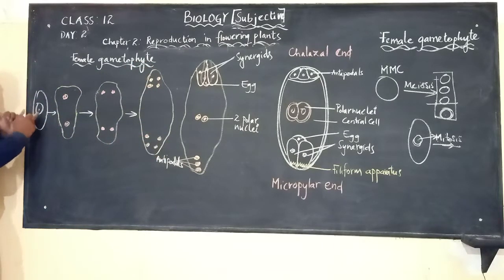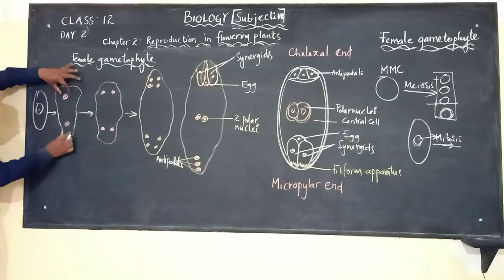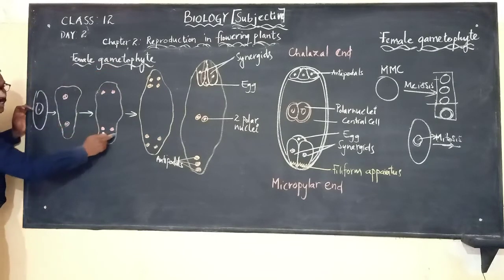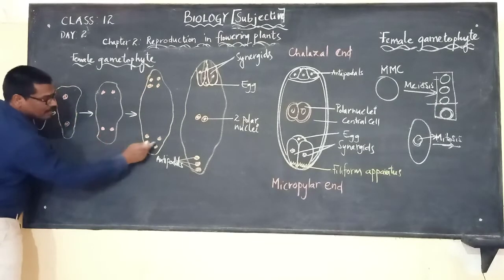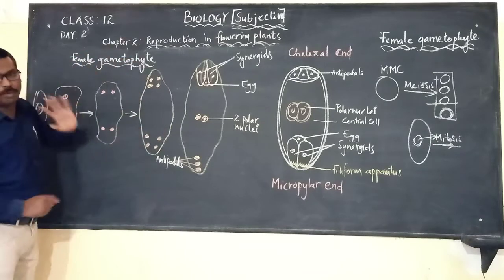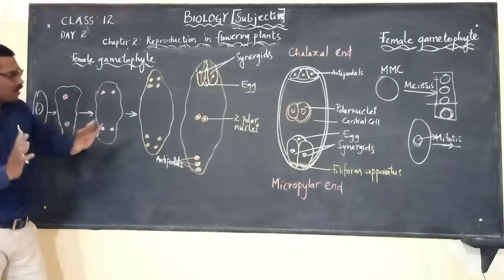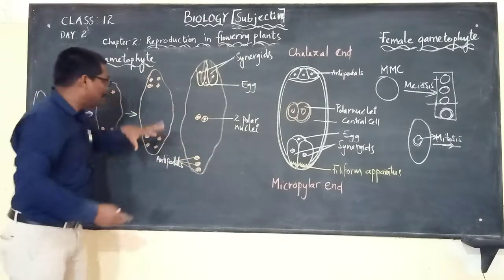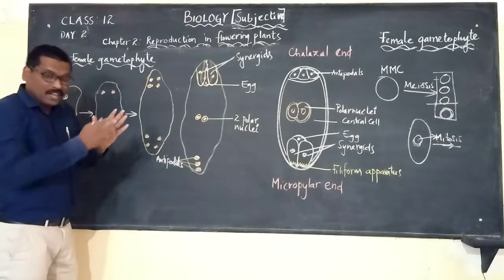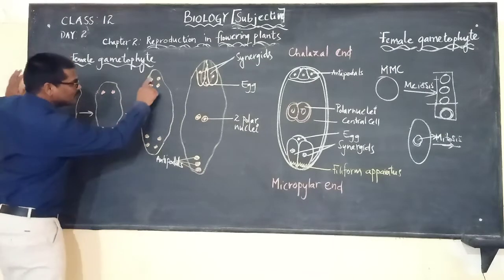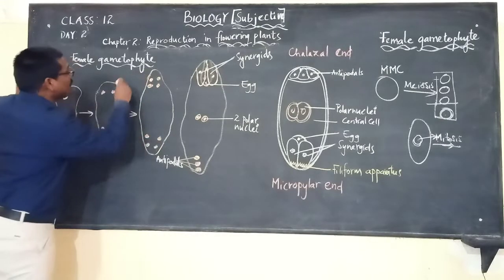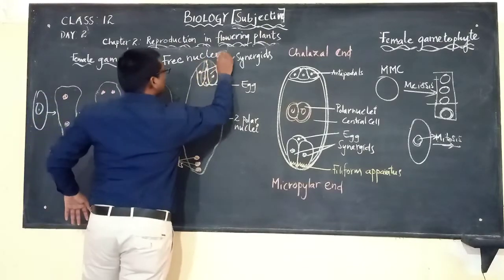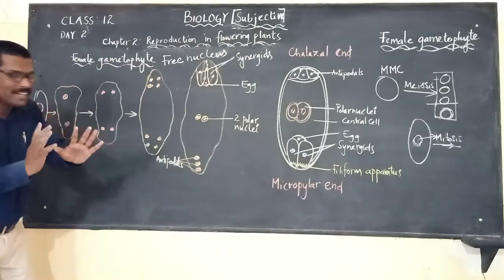One nucleus divides mitotically into two, and these two nuclei move to opposite poles. At each pole, the nuclei divide mitotically: two become four at one pole, and two become four at the other pole. Totally there are eight nuclei in one single cell. Cell wall formation does not occur immediately after nuclear division — a little later it takes place. So these nuclei, present freely, are called free nuclei.